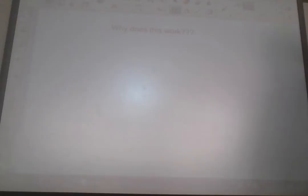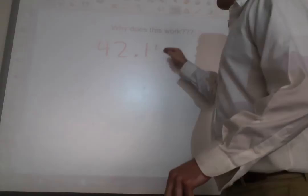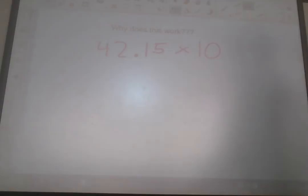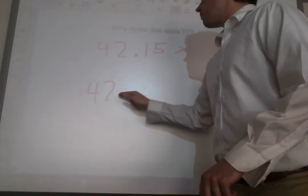Now, why does this work the way it does? Well, think about it. Let's just take a random number to start off with, 42.15. Think about what happens when you multiply a number just times 10. The digits don't change at all. The only thing that happens is the decimal hops. If you do this, you end up getting 421.5. The decimal just hopped one spot.